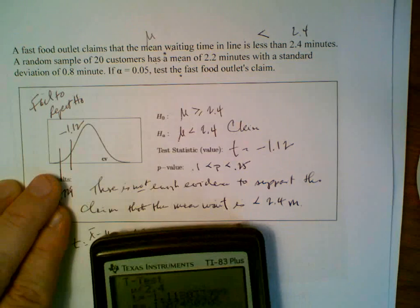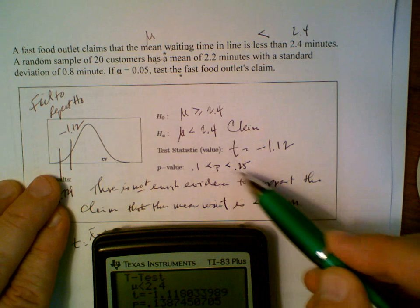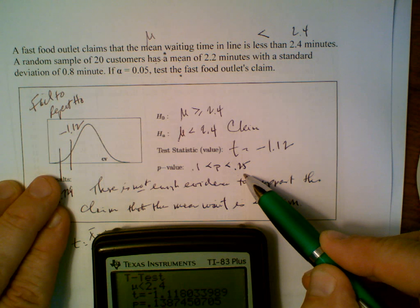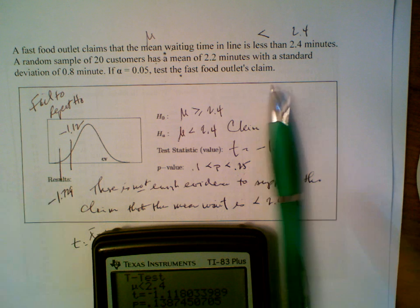It is, believe it or not, between 0.1 and 0.25. And this also confirms that we are failing to reject the null hypothesis. That's the problem.